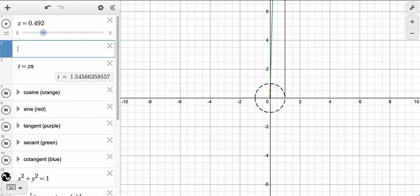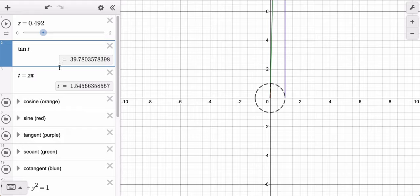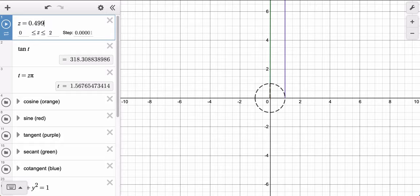All right. Now, I think what I could do is just say, what is the tangent of t? So let's just watch this for a second. We have the tangent of t, right? What if I go a little bit further, 0.49? Well, look at that. Tangent's now all the way up at 3.18.